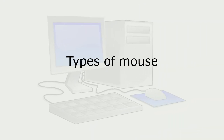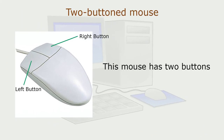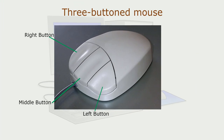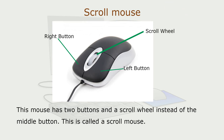Types of Mouse. A mouse can have two or three buttons on it. A two-buttoned mouse has a left button and a right button. A three-buttoned mouse has a left button, a right button, and a middle button. A scroll mouse has two buttons and a scroll wheel instead of the middle button.